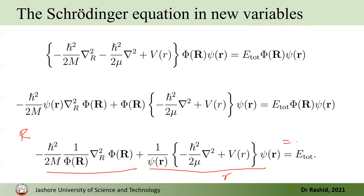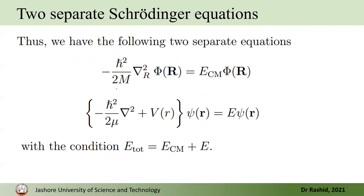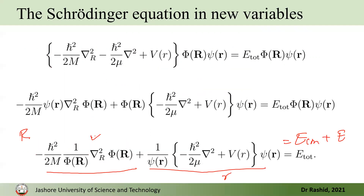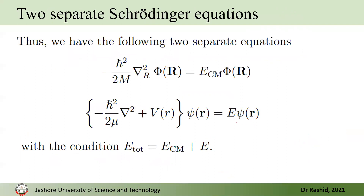If we write E_total = E_center-of-mass + E, we can separate into two equations. From one we get the Schrödinger equation for the center of mass, and from the other we get the Schrödinger equation for the relative motion of the electron. The center-of-mass equation can be seen as a free particle of mass M with only kinetic energy, and the relative motion equation can be seen as a fictitious particle of mass μ moving in a potential V(r).